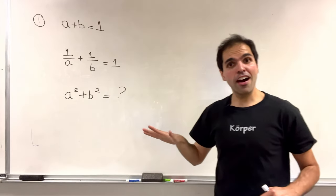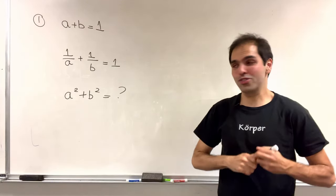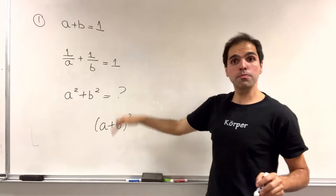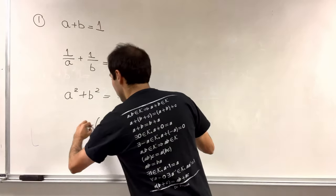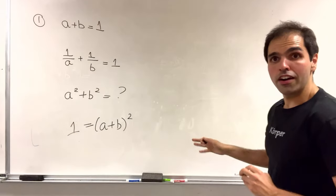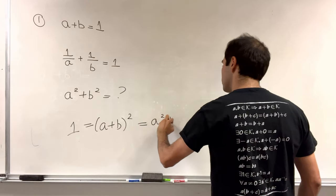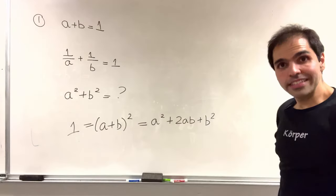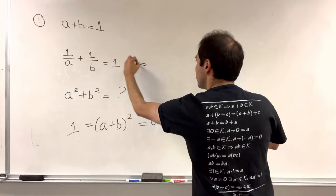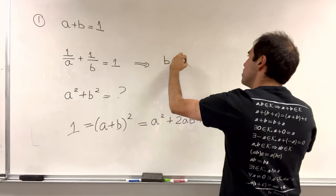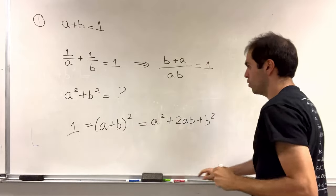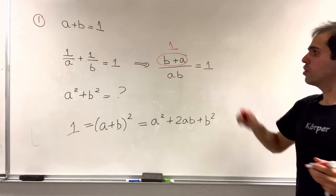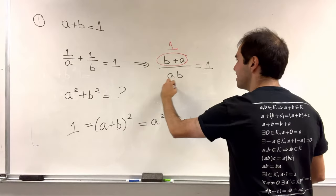Instead of calculating that, let's use the sophomore's dream and calculate a plus b squared. Then a plus b is 1, so a plus b squared is 1 squared, which is 1. On the other hand, let's expand that out, so we get a squared plus 2ab plus b squared. Now, the second line tells us something interesting because we can put on a common denominator and we get b plus a over ab equals 1, but b plus a is 1, so cross-multiplying we ultimately get that ab is 1.